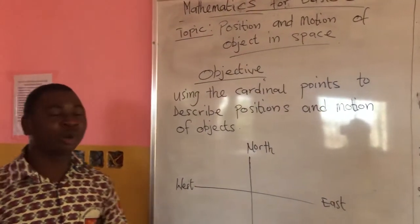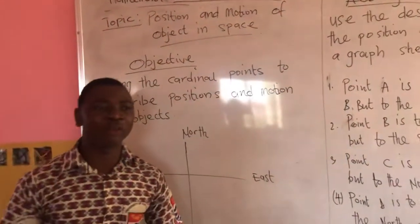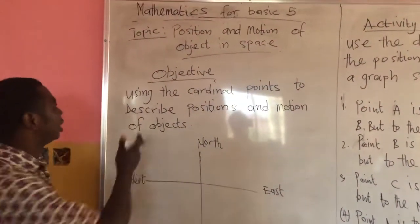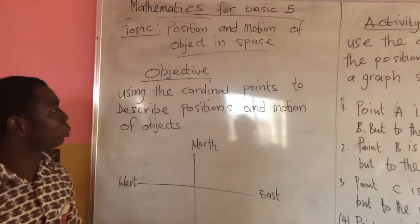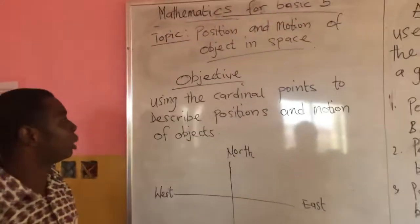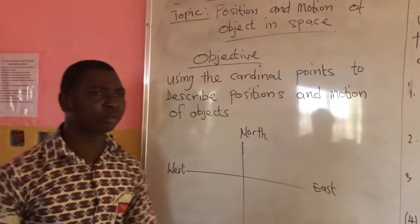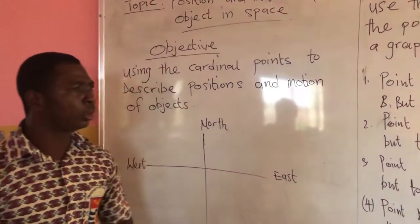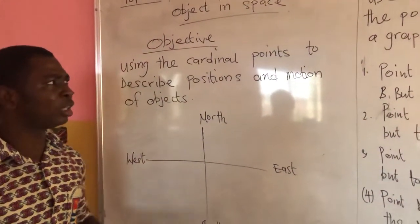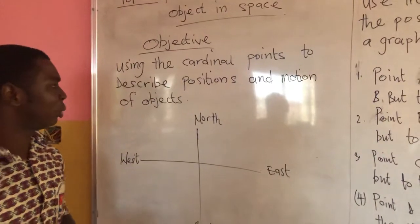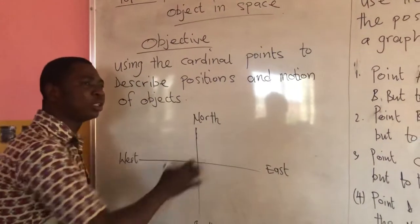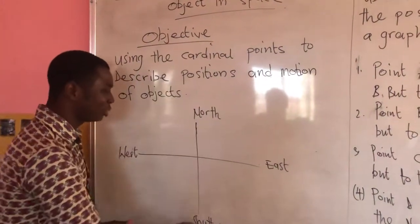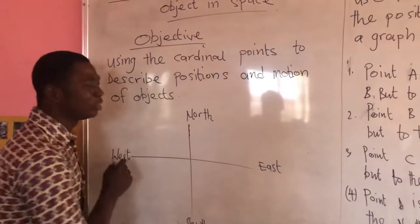Our objective — what we want to achieve at the end of the lesson — is using the cardinal point to describe position and motion of objects. Previously we studied this and we talked about the cardinal point. We said the cardinal point is North, South, East, and West.